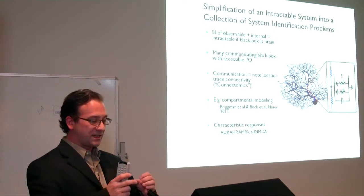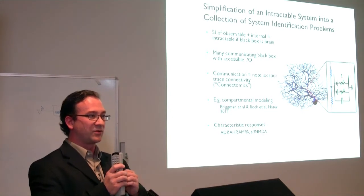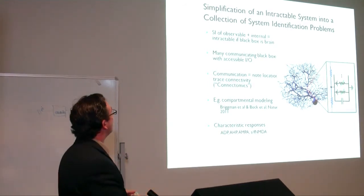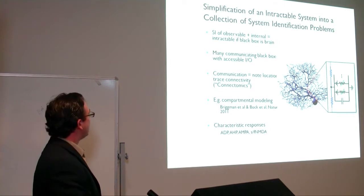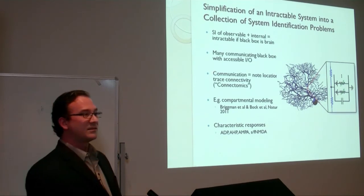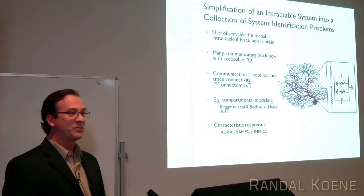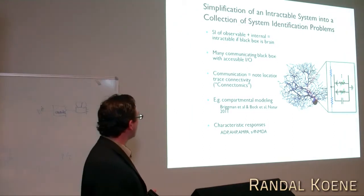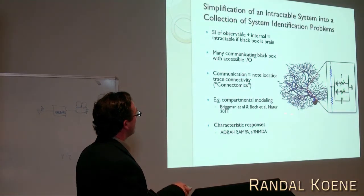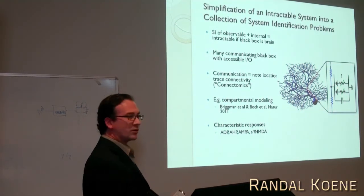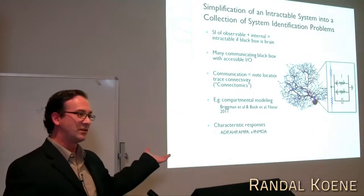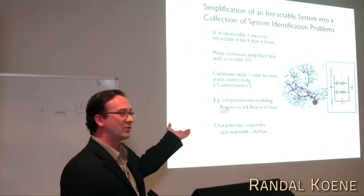But you also need to understand how these smaller subsystems interact, otherwise you're not gaining much. You need a communication map — that's what connectomics is: obtaining all the connections in a brain, currently a very popular field in neuroscience. One way of modeling even a single neuron as smaller pieces is the compartmental model, also used in the Blue Brain project — describing dendrites and axons as little cylindrical pieces.